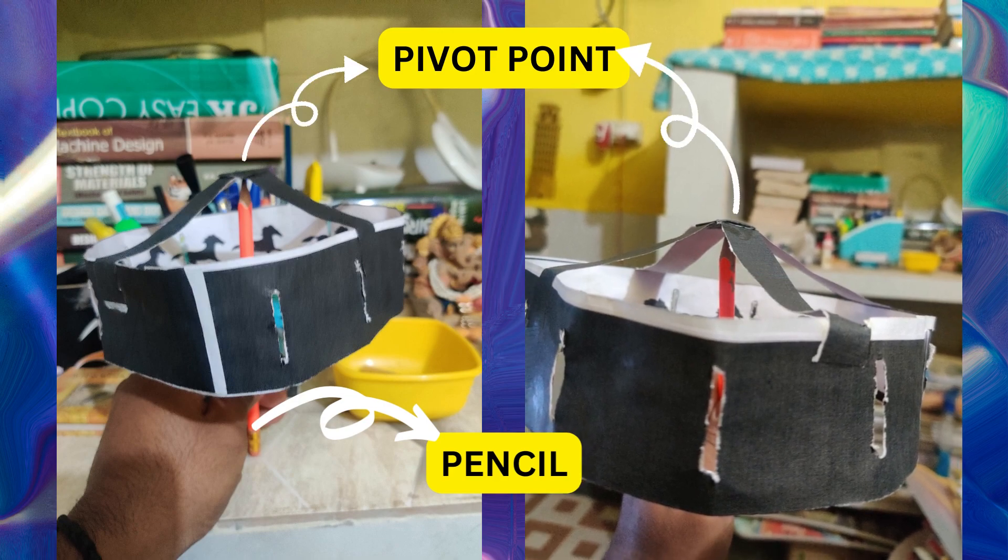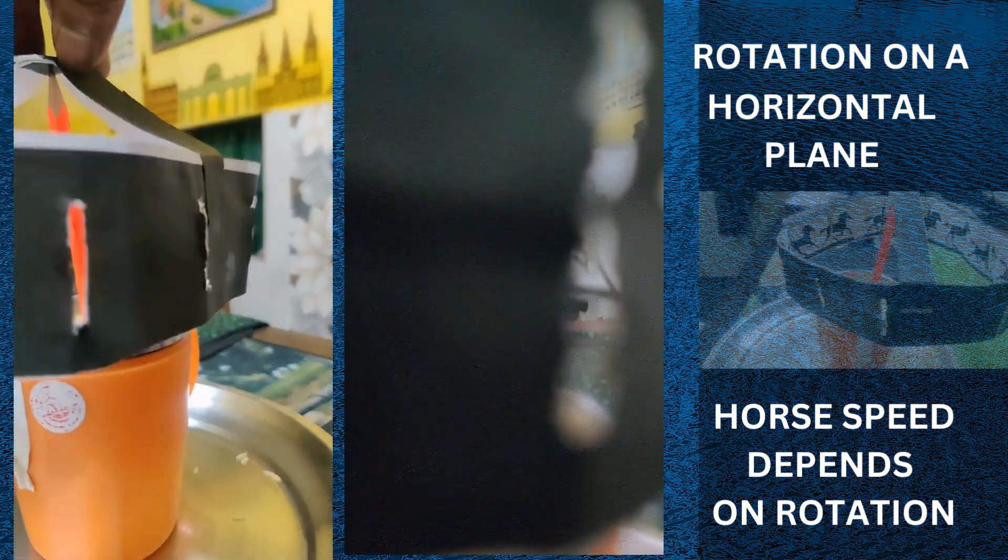Now put the model on the pencil strip. The pencil should have its point in the indentation provided at the pivot point. On the pencil strip, turn the circular ring. During the rotation of the ring, when viewed through the slits, the horse will seem to be moving. Now the ring's rotational speed will determine the horse's speed.